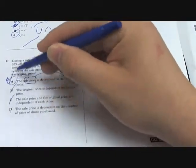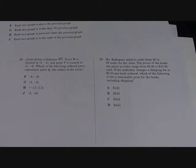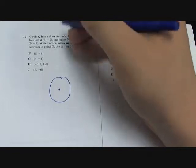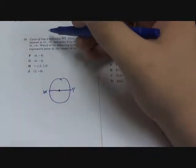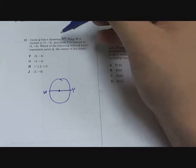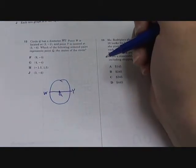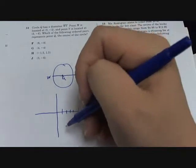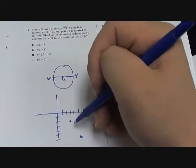Consider circle Q has a diameter WY. Draw a circle. Point W is located at 3 and negative 2, and point Y is located at 5 and negative 6. Which of the following ordered pairs represents Q, the center of the circle? So at 5 and negative 6 at this point, and 3 and negative 2 at that point, so that's the diameter.